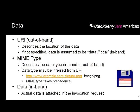The data portion has three parts, trying to describe the data as much as possible to help the invocation framework find the best fit target and help the target understand the content. The first parameter is the URI — if your data is in the file system somewhere, in your sandbox or a shared space, you can point the invocation framework to it. That's how you specify a location for the content.